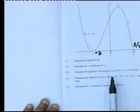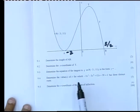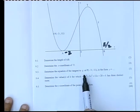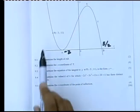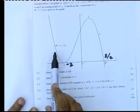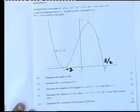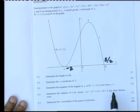9.3 says determine the equation of the tangent to that graph G at the point P, which has coordinates minus 3, 11, and write it in the form Y equals.